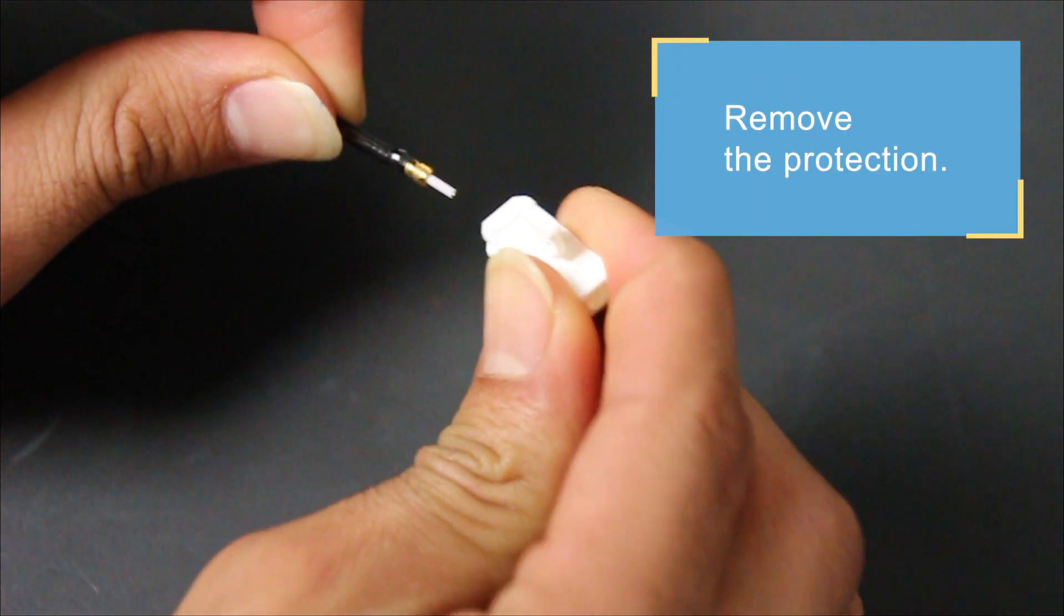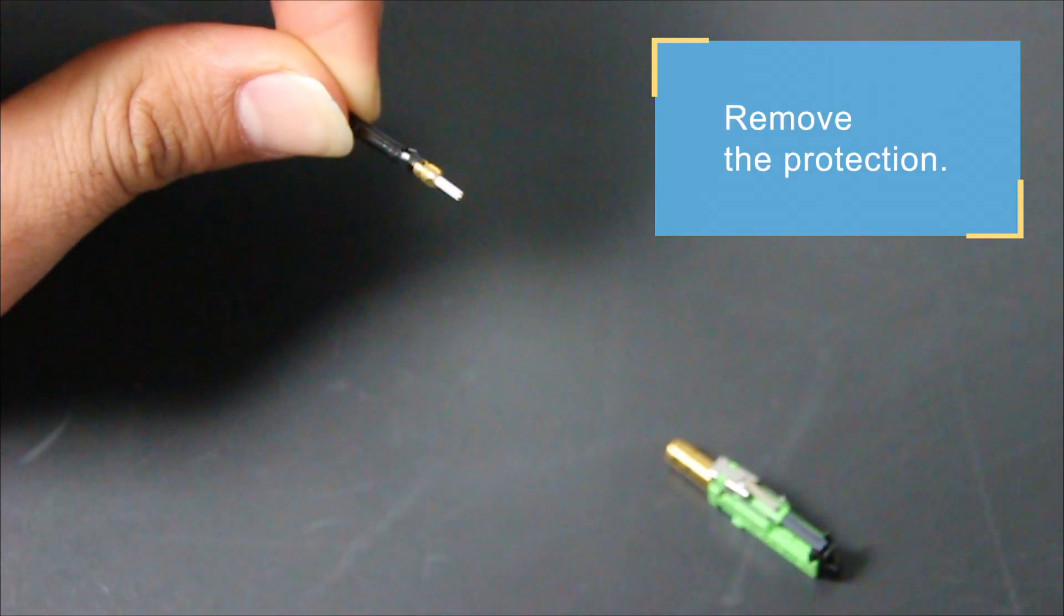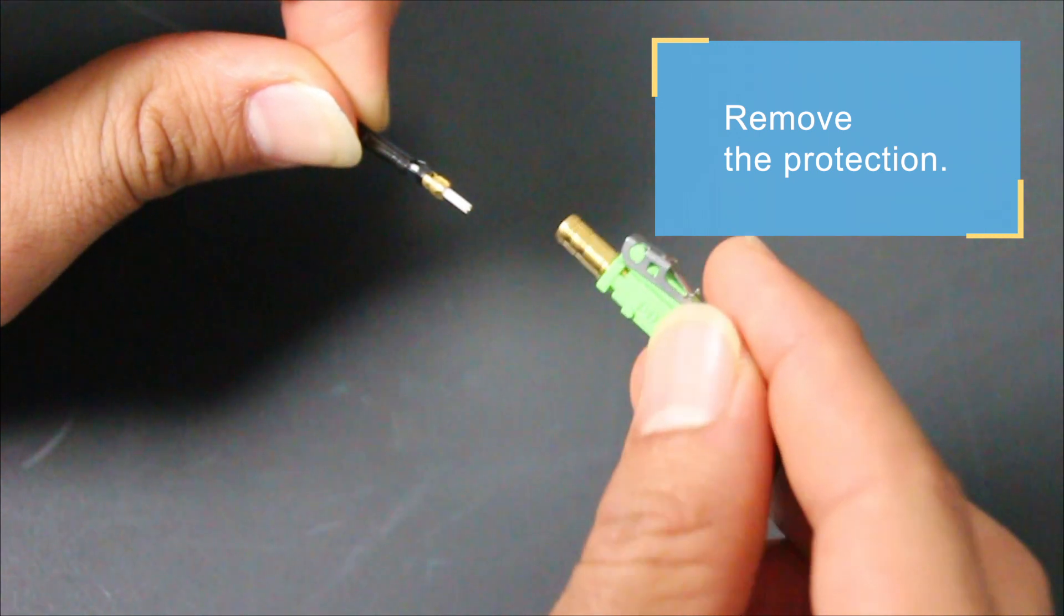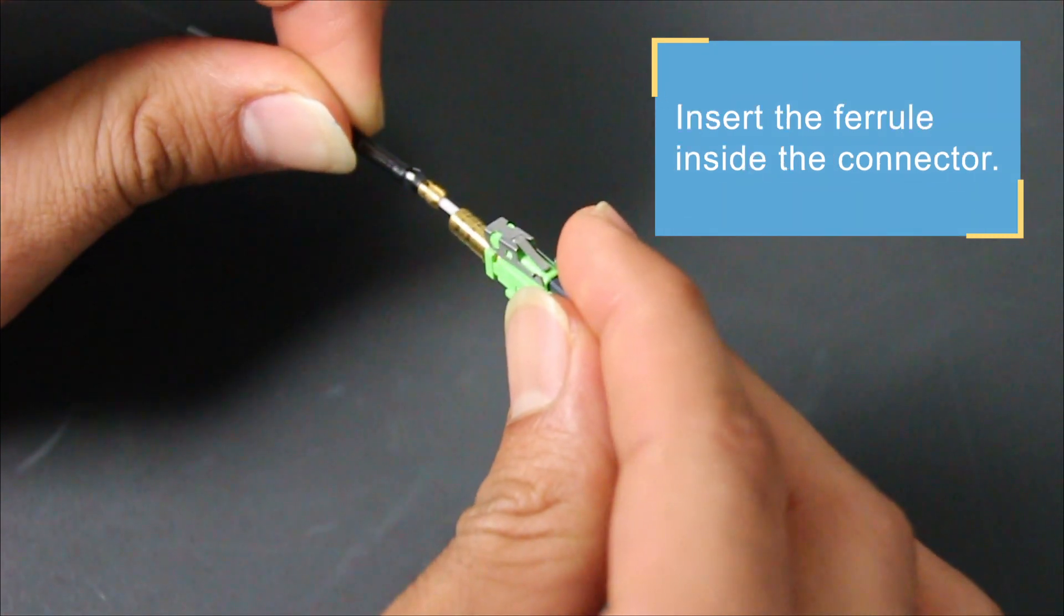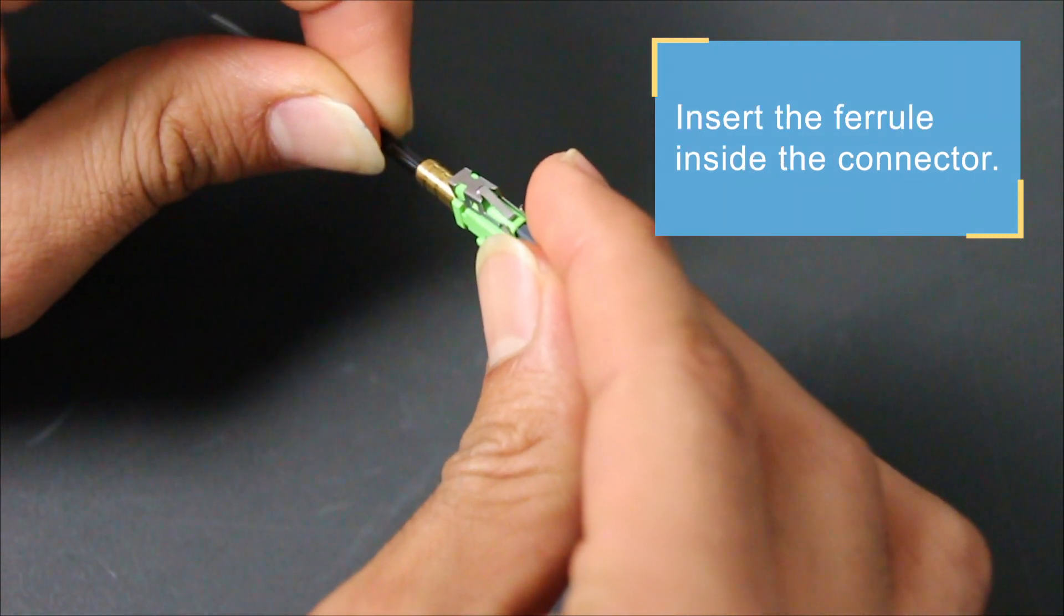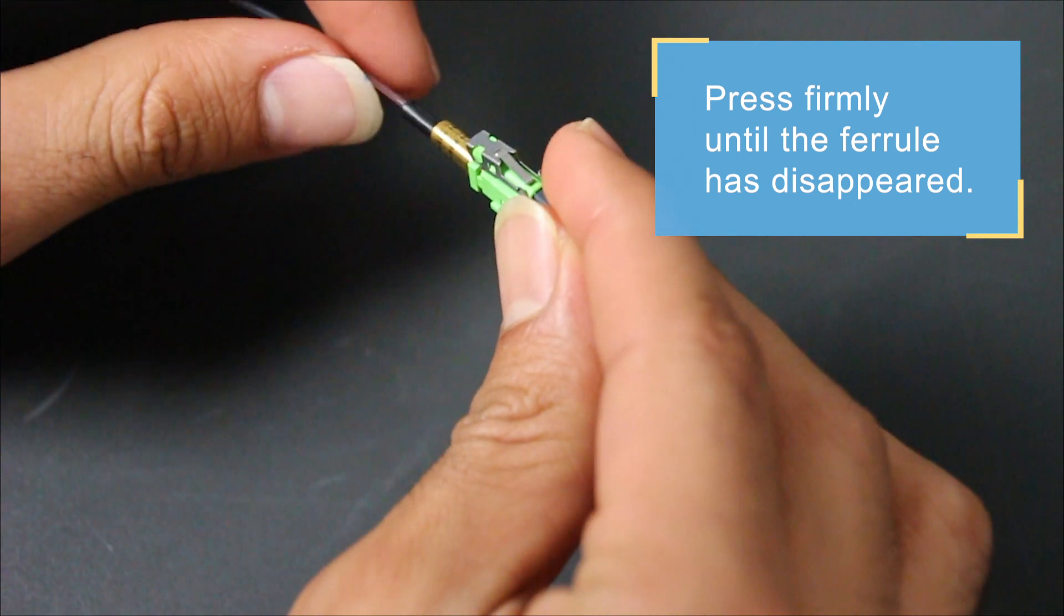Then, remove the ferrule from its protection. Insert it into the LC-APC connector. Press until the whole ferrule has disappeared.